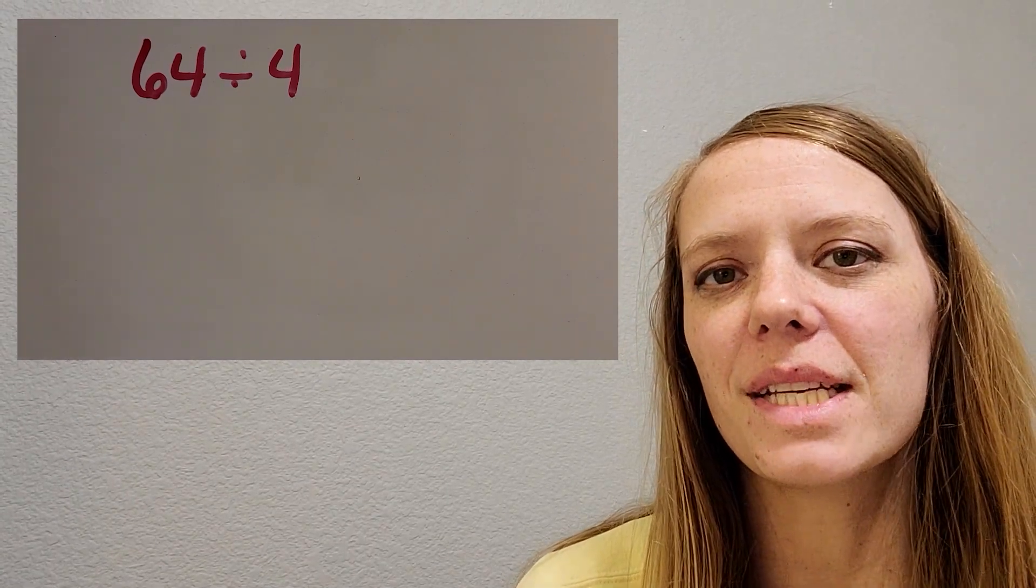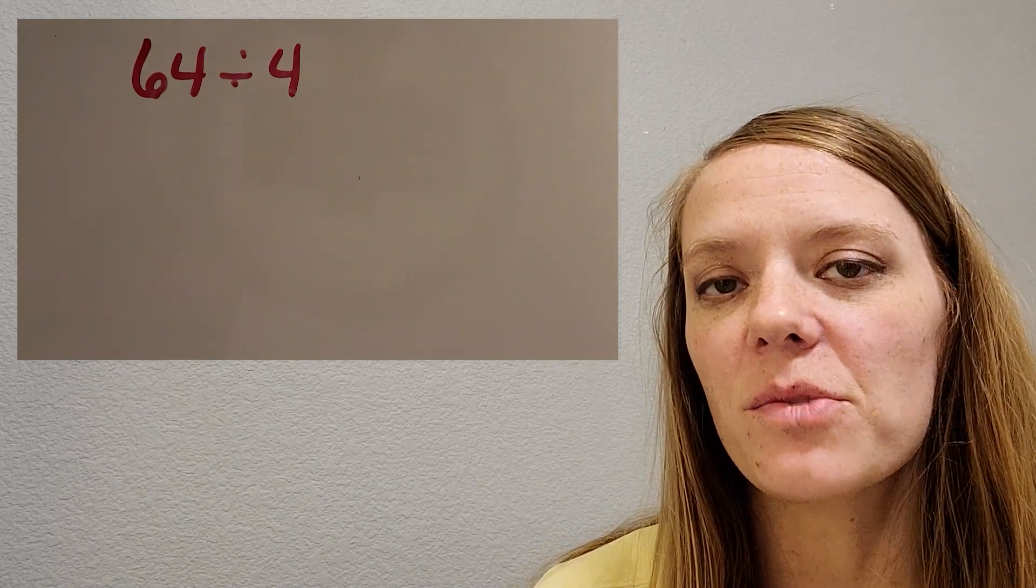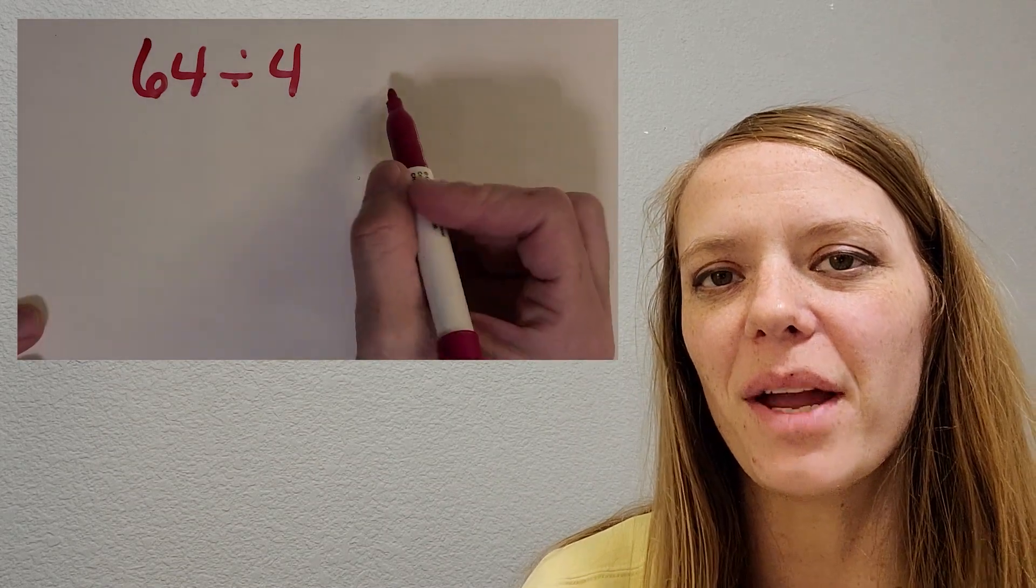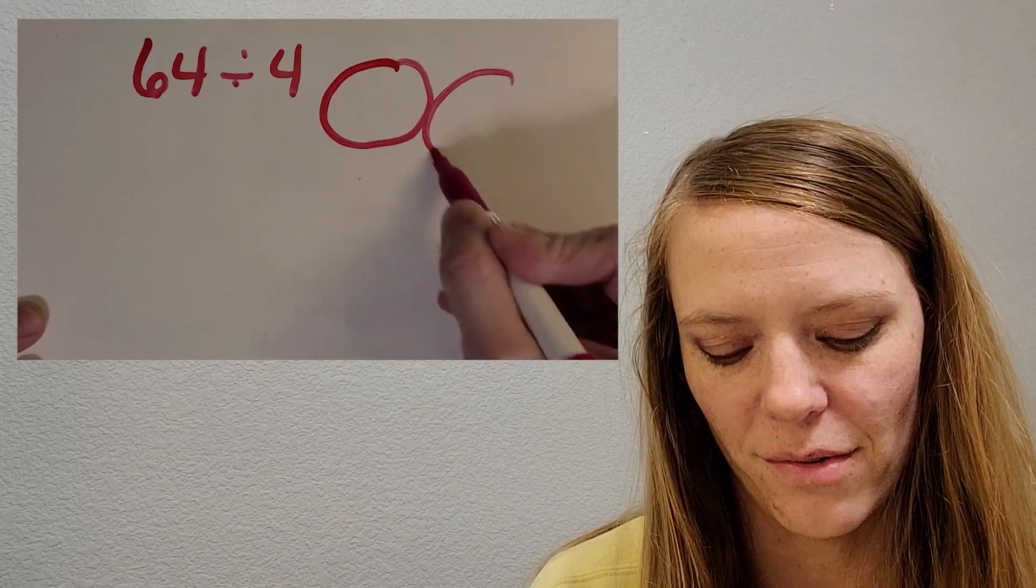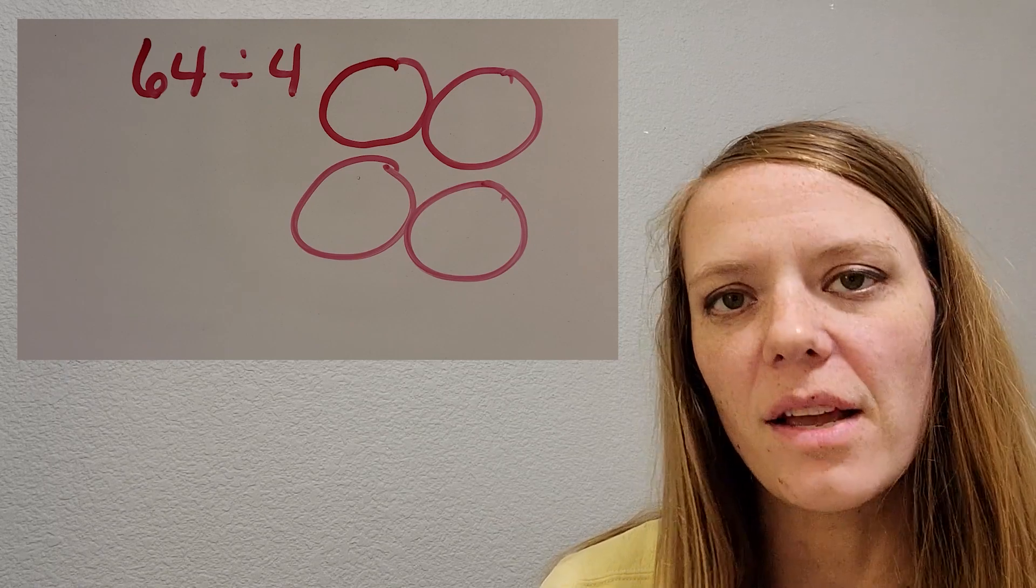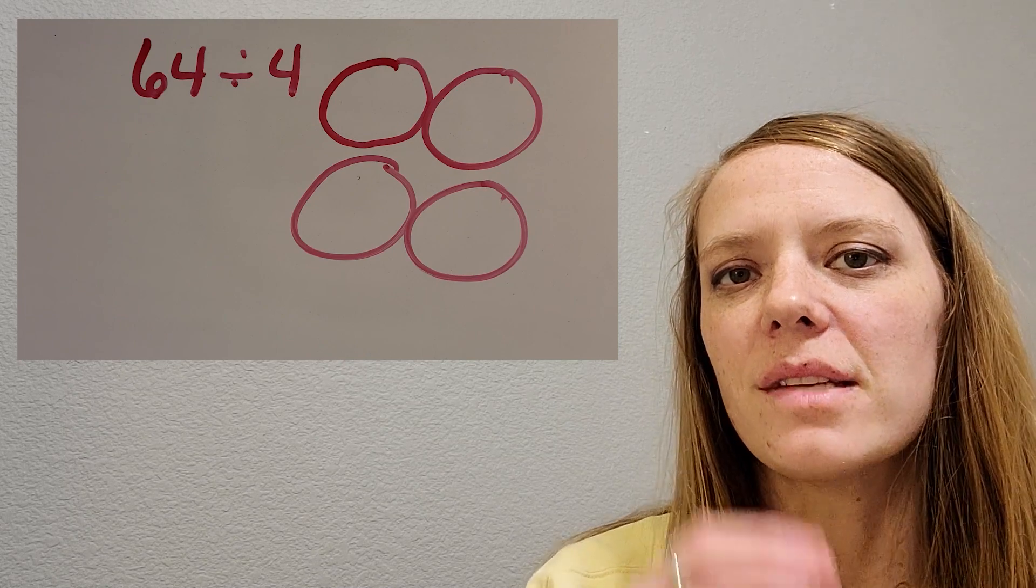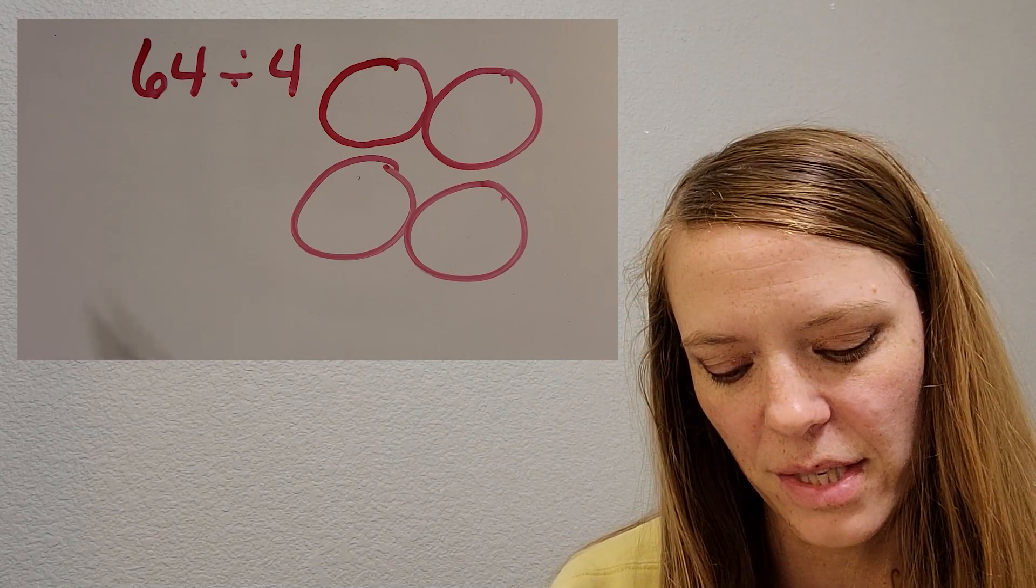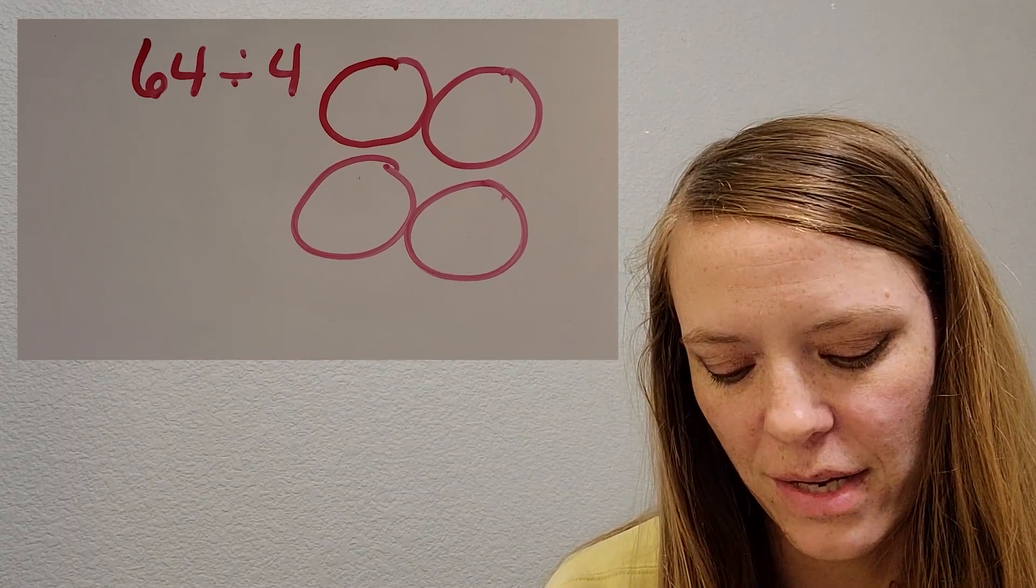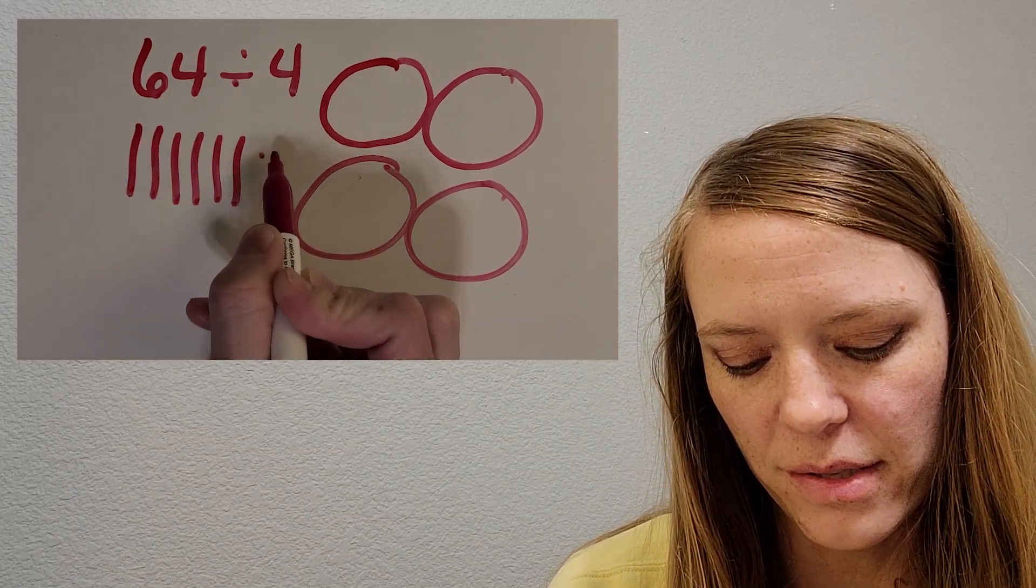All right. Let's look at this next one. So we have 64 divided by four. And just like the last one, how many groups do I need to draw to solve this problem? Okay, great. Four circles for the four friends. So let's draw those. And then just like on the last one, I like to draw the base 10 drawing to really help me start separating into groups. So let's do that together. How would I draw 64?